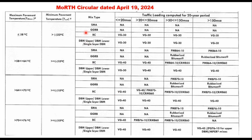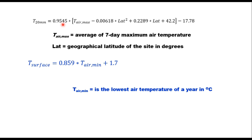In this table there are two key temperature terms. Maximum pavement temperature is measured at 20 millimeters below the surface, and minimum pavement temperature is the surface temperature. These temperatures are estimated using specific equations. T at 20mm depth is given by: T_air_max minus 0.00618 times latitude squared, where latitude is the geographical latitude of the site in degrees and T_air_max is the average seven-day maximum air temperature. The surface temperature is given by: 0.859 times T_air_minimum plus 1.7, where T_air_minimum is the lowest air temperature of the year in degrees centigrade.